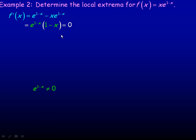Setting that equal to 0, there are two factors. For e^(1-x), there are no real solutions — that is why it is marked not equal to 0. You cannot raise any real number base to any exponent and get 0. For example, 2^x can never equal 0. Whether x is an integer or a rational number like 1/4, the fourth root of 2 is still a decimal greater than 0. So e^(1-x) can never equal 0.